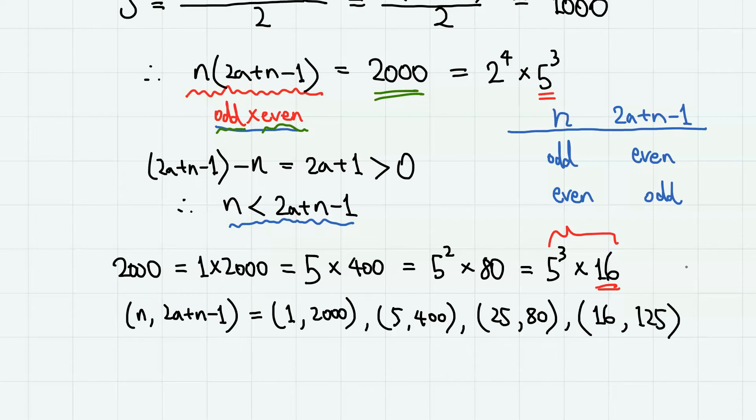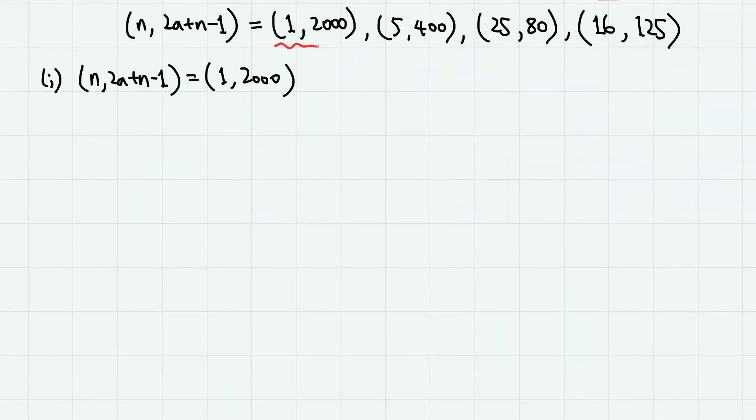Now let us examine each case. So the first case, 1 and 2000. From here, since n equals 1, we have 2a equals 2000. Therefore, a equals 1000. But this is just 1000 as the sum of a single natural number, which is 1000. So this does not make a sum of several consecutive natural numbers. So this case is not valid.